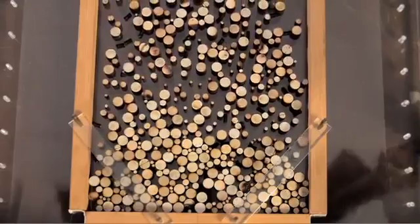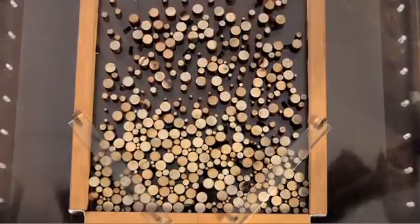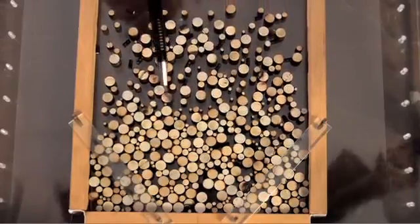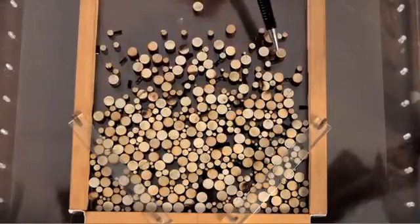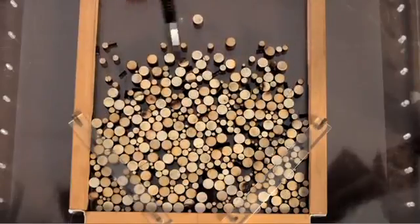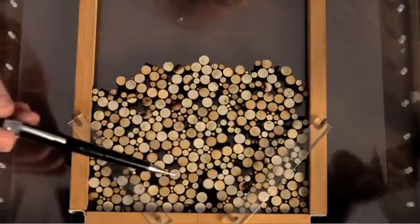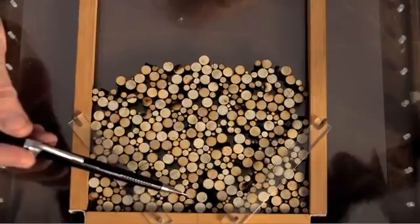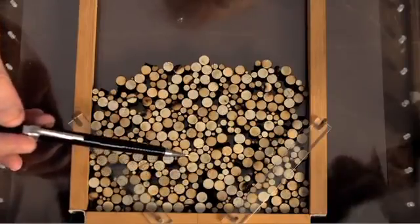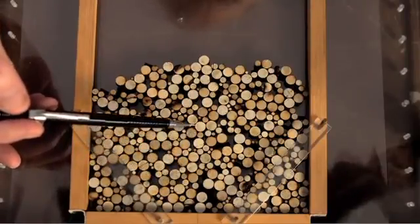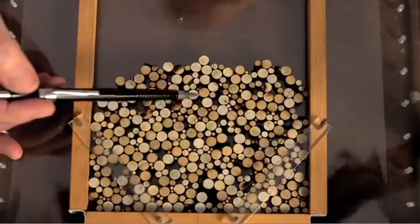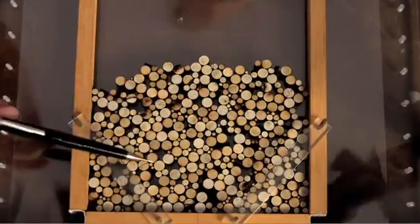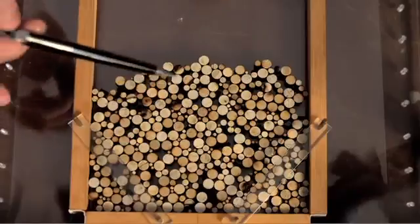And you can see that they're settling on the bottom and they're now shuffling around and forming themselves into an arrangement of particles. You can see these near vertical columns and they're very important because it means the soil is stronger in the vertical direction than the horizontal direction. And that's because this has been deposited under gravity.